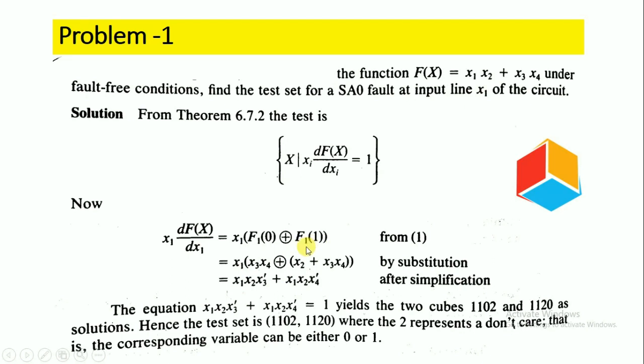For f1(1), this represents stuck-at-1 fault. When x1 = 1, f(x) = 1·x2 + x3·x4, which simplifies to f(x) = x2 + x3·x4. This is represented as x2 + x3·x4.